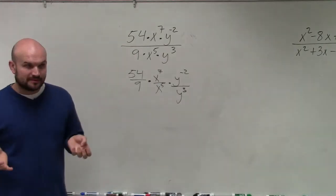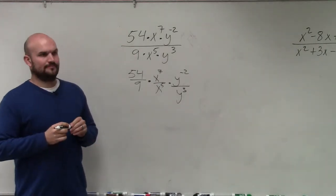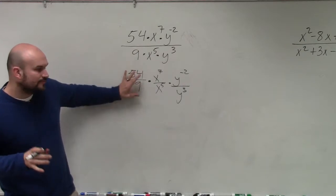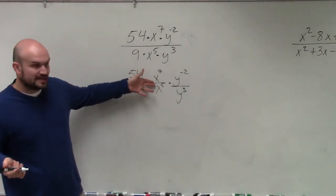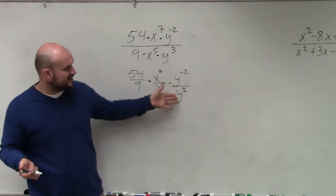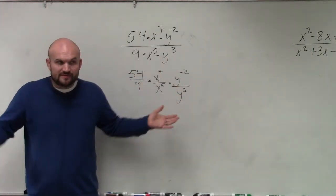Now, if you guys remember, what we basically do is you can simplify 54 over 9, you can simplify x to the seventh over x to the fifth, and you can simplify y to the negative second divided by y cubed using our rules of exponents.